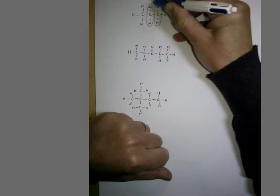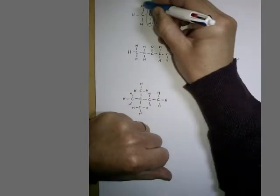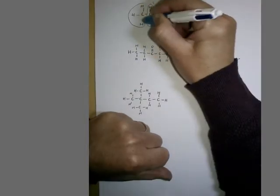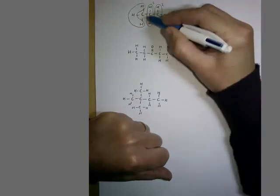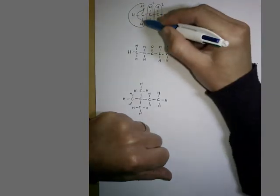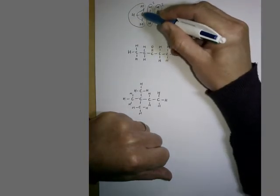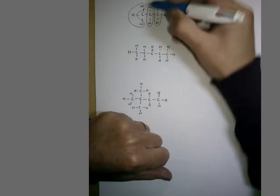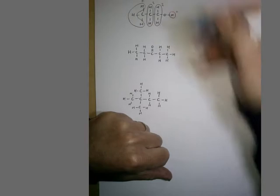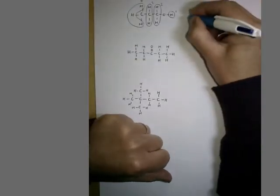Hopefully you can see that we also have a fourth hydrogen environment. These hydrogens at the end of the chain — each of them is attached to a carbon which is attached to two hydrogens and a C2H5O. So we've got four hydrogen environments in propan-1-ol.